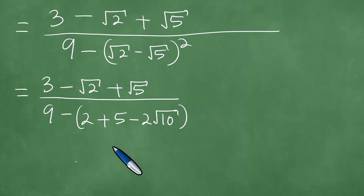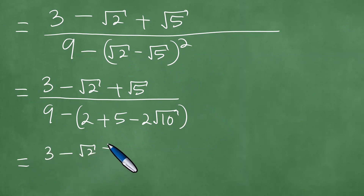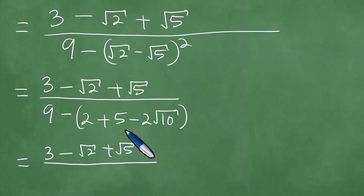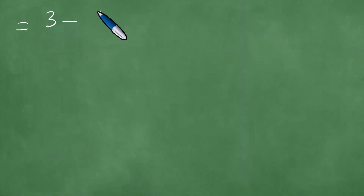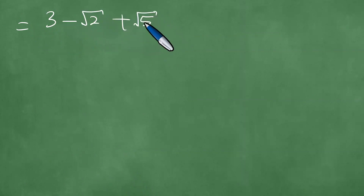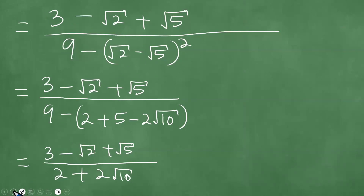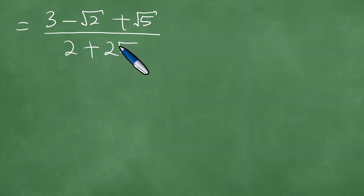So it is 3 minus the square root of 2 plus the square root of 5 divided by — now 2 plus 5 is 7, and 9 minus 7 is 2, plus 2 times the square root of 10. So in the end, what we're getting is 3 minus the square root of 2 plus the square root of 5, divided by 2 plus 2 times the square root of 10.